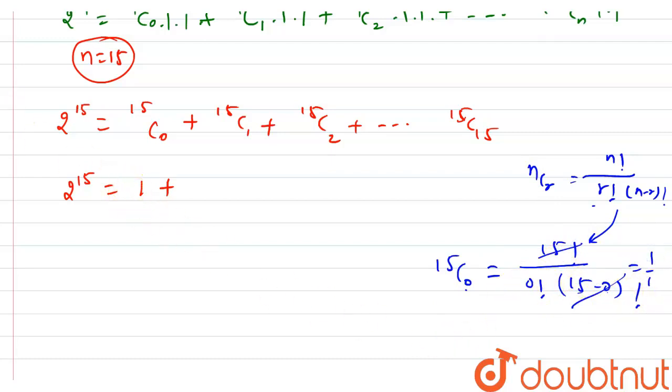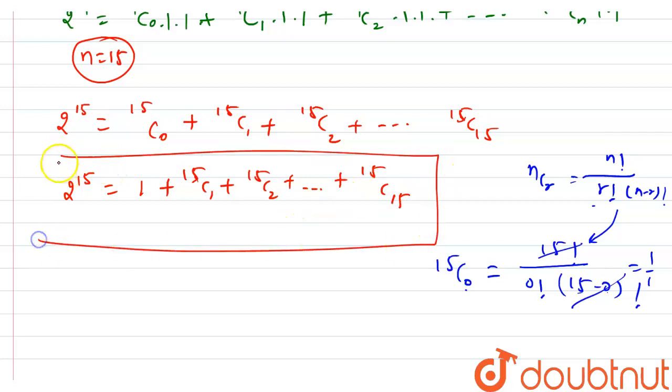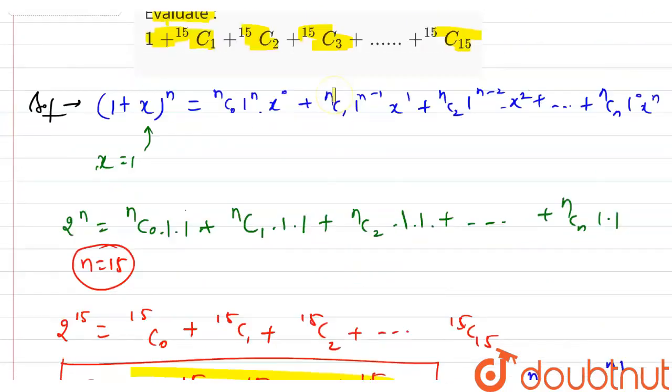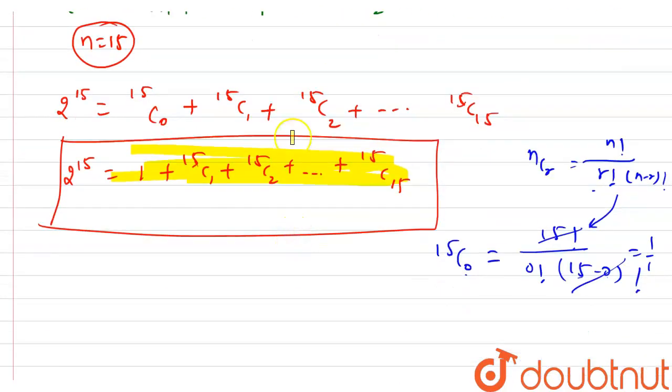The remaining thing I'm writing as it is: 15C1 + 15C2 + and so on 15C15. This right-hand side is what we have to find. This is what we have to find in the question. And this is my 2^15, and this is the final answer for this question.